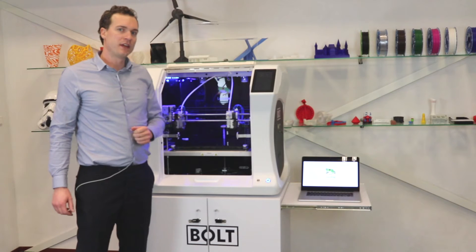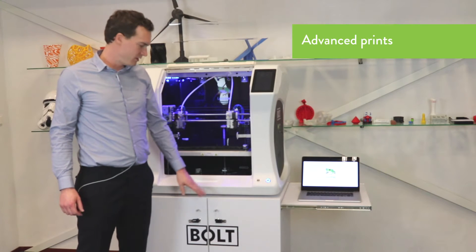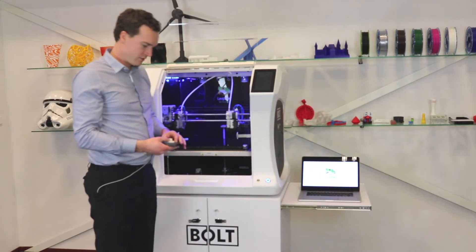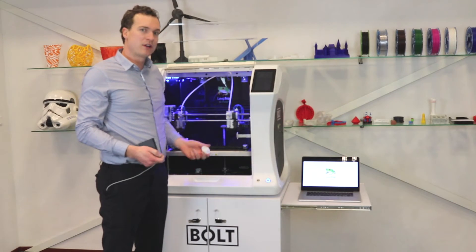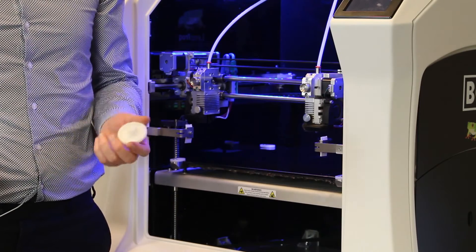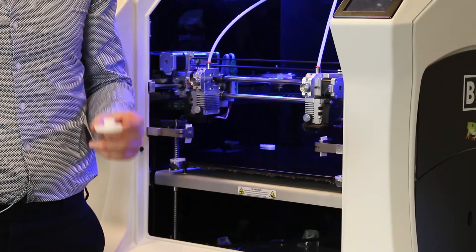The Bolt's technical specifications allow you to print a number of advanced prints. For instance, this polycarbonate gear was printed with a high temperature hotend and was made to be very strong and can be used in an industrial application.